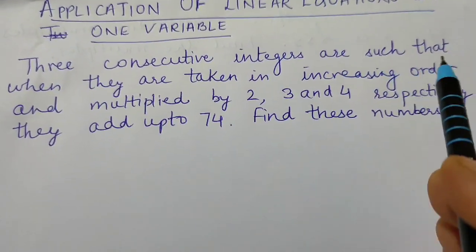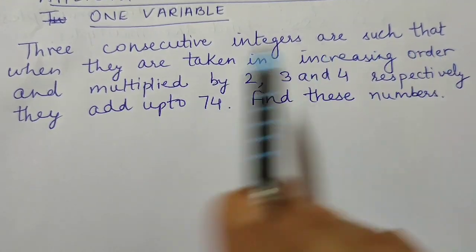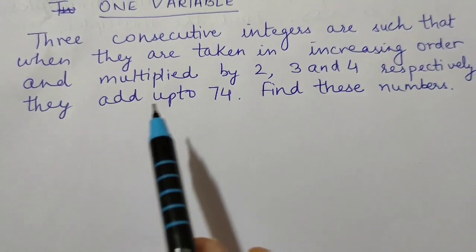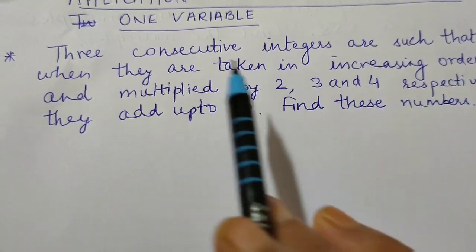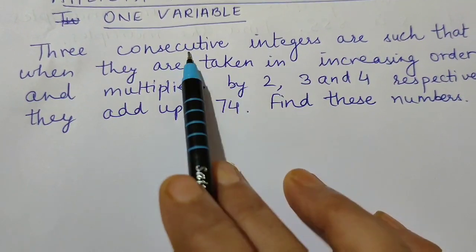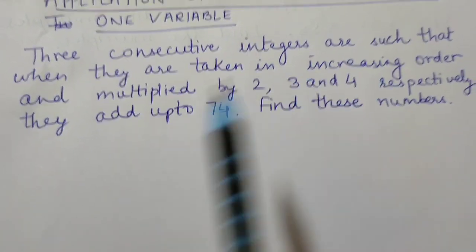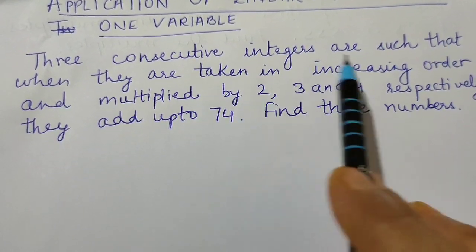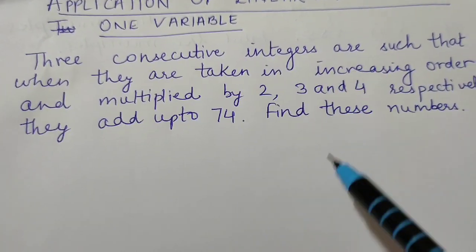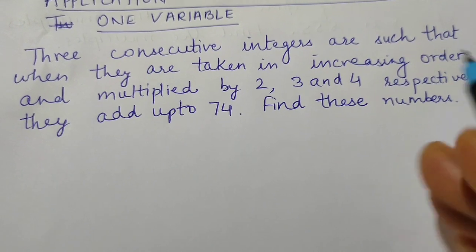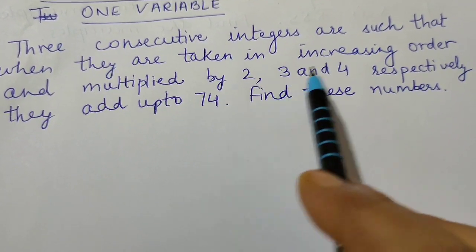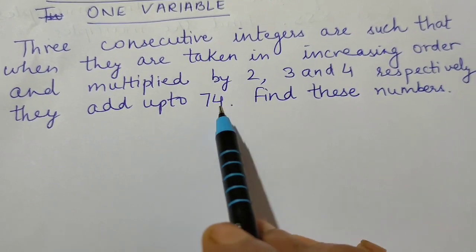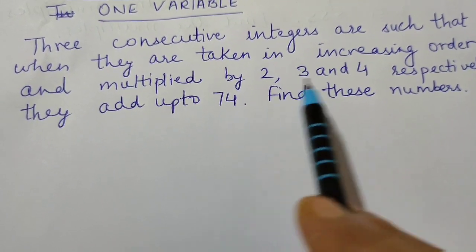Three consecutive integers are such that when they are taken in increasing order and multiplied by 2, 3 and 4 respectively, they add up to 74. Find these numbers. Consecutive means numbers that come one after the other. Increasing order means smallest to greatest, and their sum after multiplying is 74.